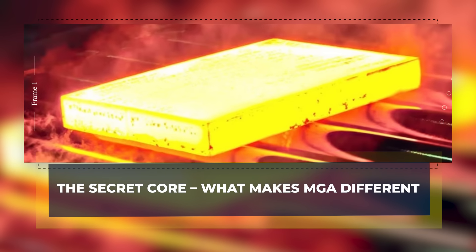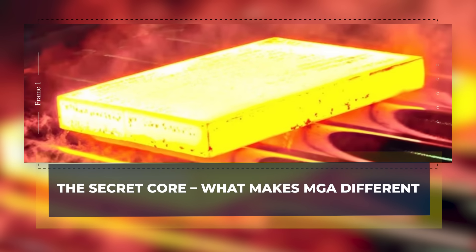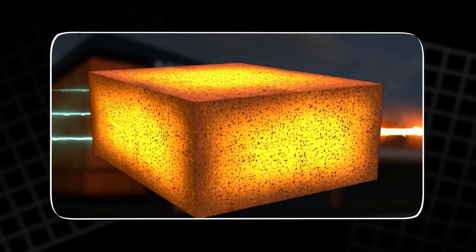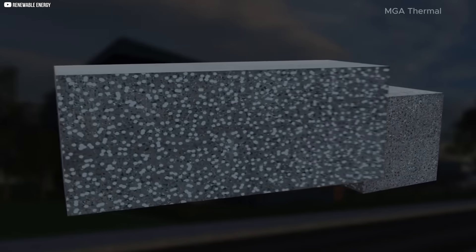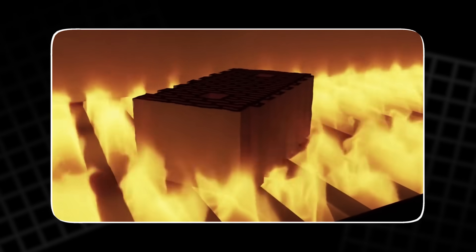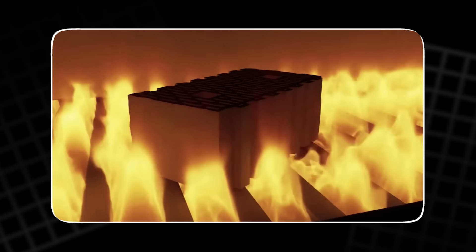The secret core. What makes MGA different? At the center of everything is the block. It's not flashy. It looks like a black brick. Dense and heavy. About the size of a shoebox. But inside it, something extraordinary happens.